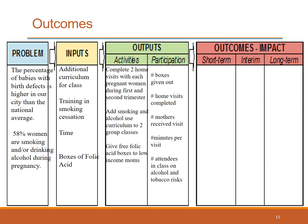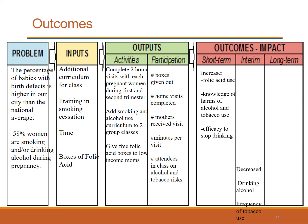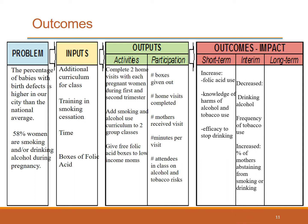Returning to our case, the short-term outputs of our program might include an increase in folic acid use, knowledge of the harms of alcohol and tobacco use, and self-efficacy to stop drinking. In the interim, our program would hope to see decreases in drinking alcohol and decreases in the frequency of tobacco use, as well as increases in the percentage of mothers abstaining from smoking and drinking. The long-term impact the program desires to make is a decrease in the overall percentage of birth defects seen in the clinic.